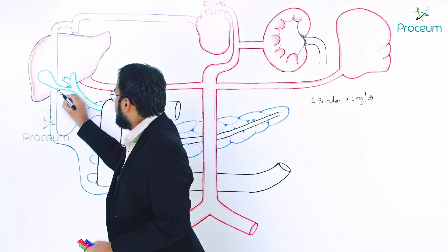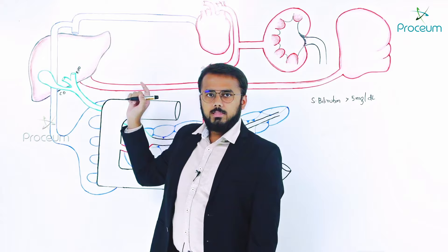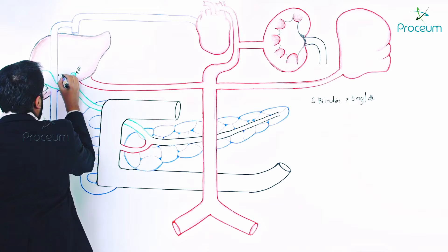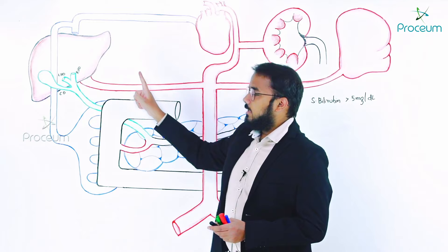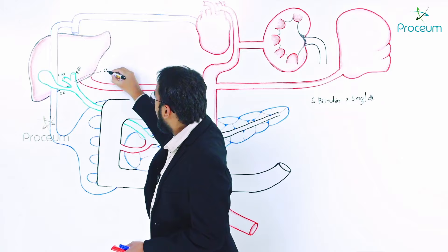This is called the right hepatic duct, and here is the left hepatic duct. The right hepatic duct and the left hepatic duct together join to form the common hepatic duct. This one here is your common hepatic duct.